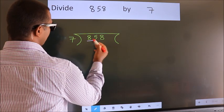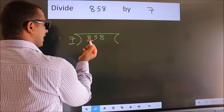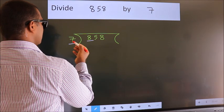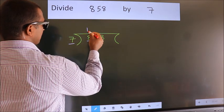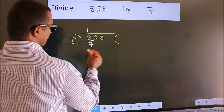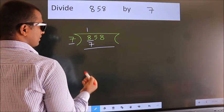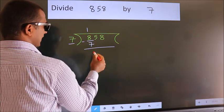Here we have 8, here 7. A number close to 8 in the 7 table is 7 once 7. Now we should subtract. We get 1.